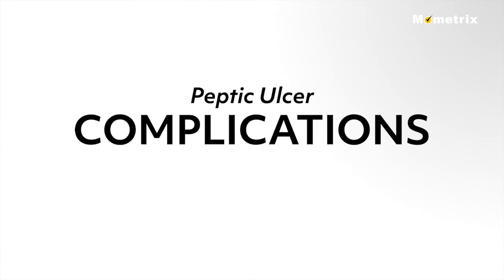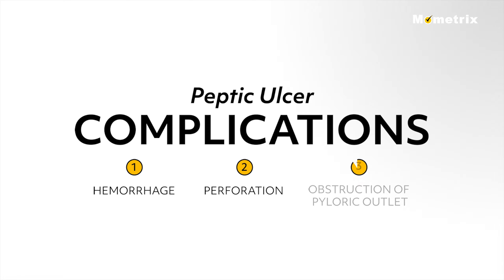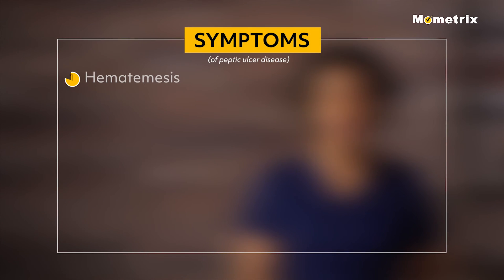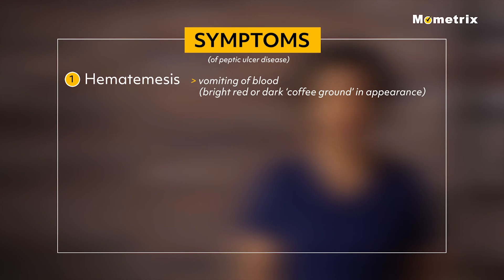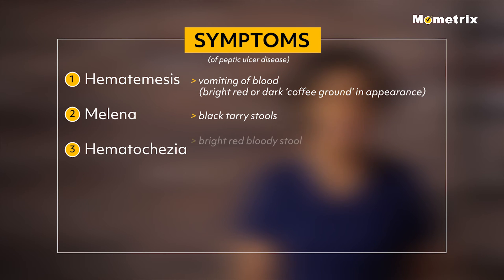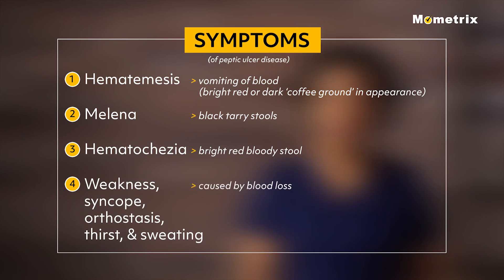The major complications of peptic ulcer disease include hemorrhage, perforation, and obstruction of the pyloric outlet. The most common complication is mild to severe GI hemorrhage. Symptoms include hematemesis — vomiting of blood either bright red or dark coffee ground in appearance — melena (black tarry stools), hematochezia (bright red bloody stool), and weakness, syncope, orthostasis, thirst, and sweating caused by blood loss.